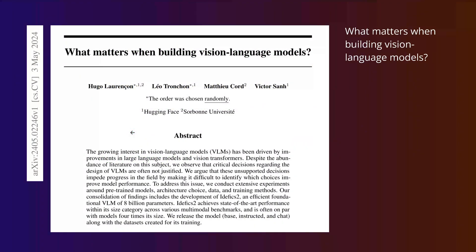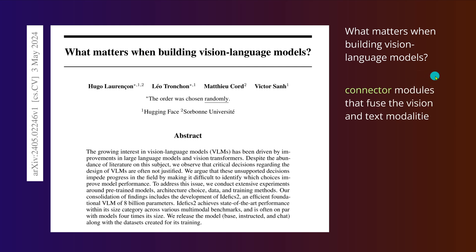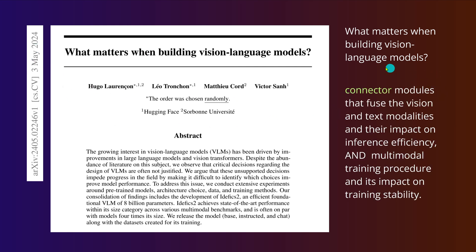For a different perspective, a 2024 paper from Hugging Face under Sorbonne — 'What matters when building vision language models?' — already found that it is the connector modules fusing vision and text modalities that most impact inference efficiency, along with multimodal training procedures and their impact on training stability. We are more or less at the same level as May 2024 — we have pushed the boundaries a little, but have not come up with a completely new connector with truly high performance efficiency. Hope you enjoyed it — see you in the next video.